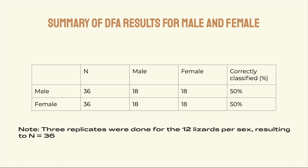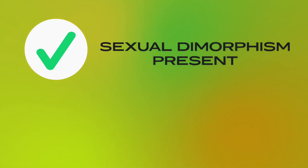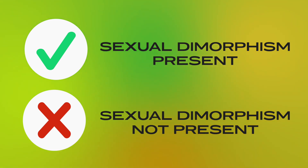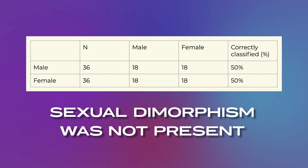We then had to manually determine the correctly identified number of male and female lizards, since the data was computer-analyzed. In our case, only 50% of both male and female lizards were correctly identified. Step two: interpret the data. Through the correct and incorrectly identified specimens, we determine if sexual dimorphism is present. If most were assigned correctly, sexual dimorphism is present; if most were assigned incorrectly, it is not. Since half were assigned incorrectly, sexual dimorphism was not present in Hemidactylus frenatus lizards.